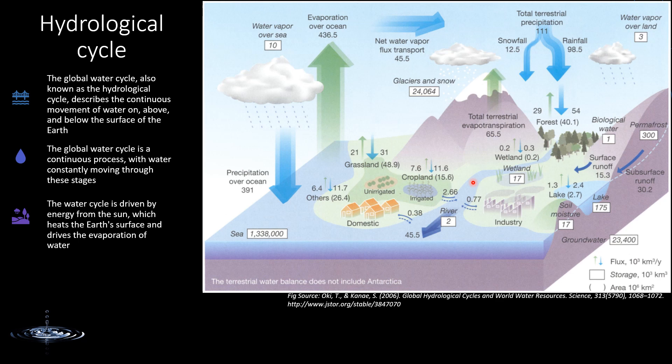The hydrological cycle involves both natural and anthropogenic cycles. The natural cycle is how water is naturally cycled through the Earth, atmosphere, ocean, and landmass, driven by the energy of the sun. The anthropogenic cycle involves the impact of human activities on hydrological cycles — for example, building dams, irrigation systems, or other water management structures, which impact the potential evaporation, runoff, and groundwater infiltration.